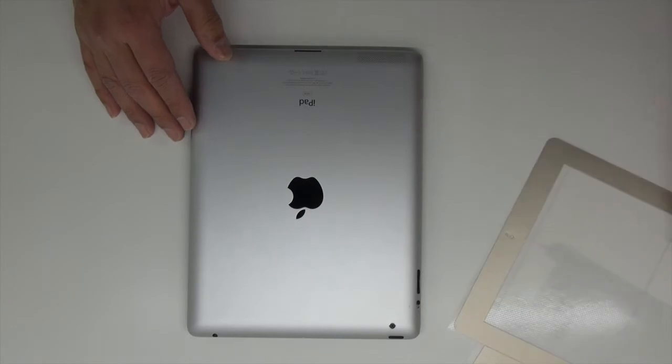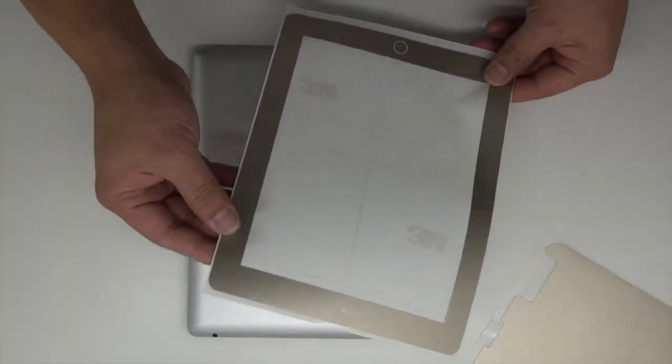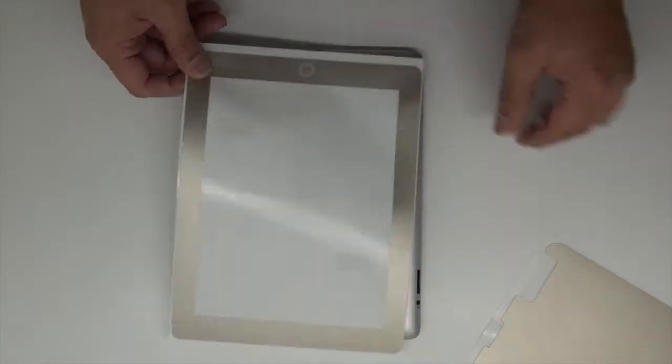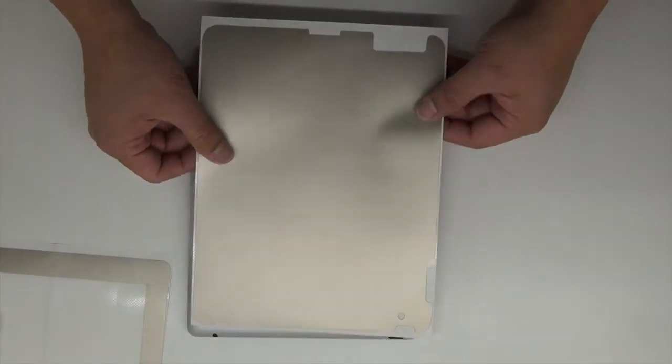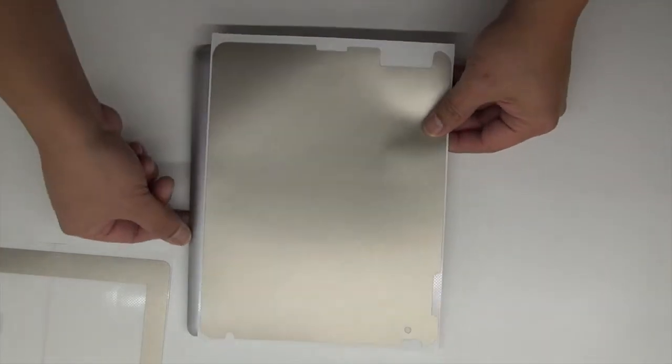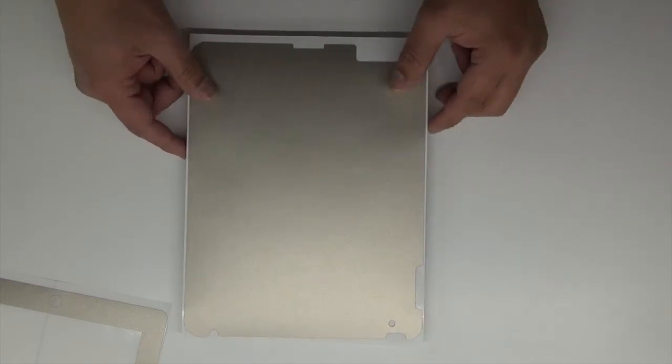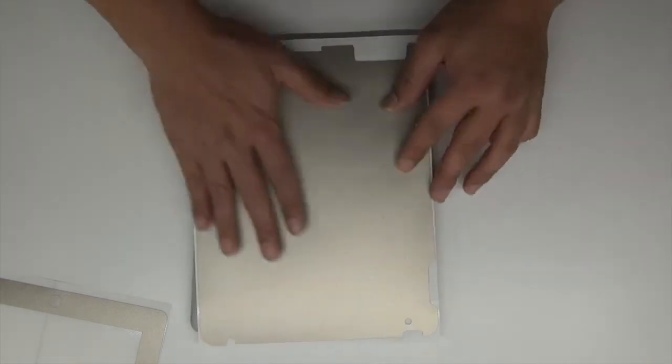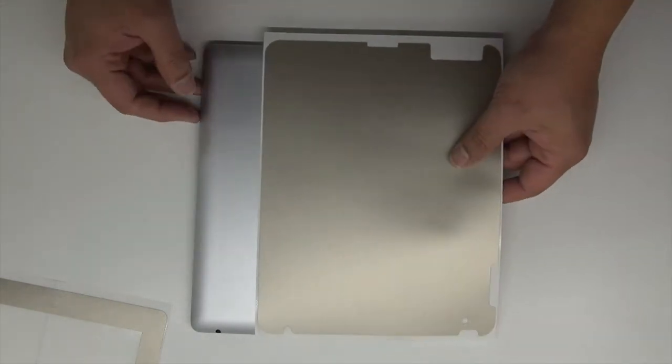Hey guys, today we have an iPad second generation and we're going to be installing a new color on this device. This is the new champagne gold with a nice reflective matte finish. In the video it may look a little lighter than in person, but it is a nice color that will match your new gold iPhone 6.